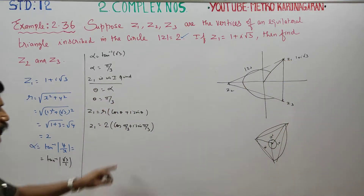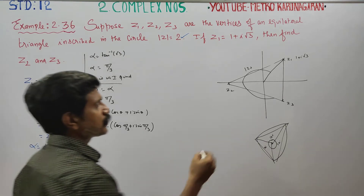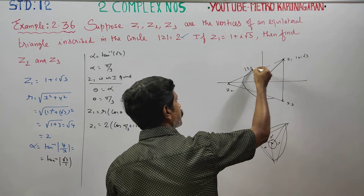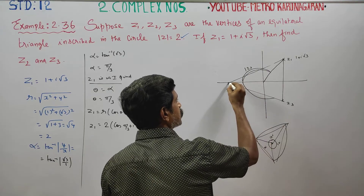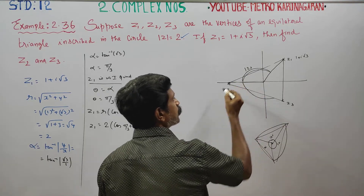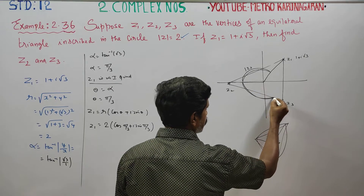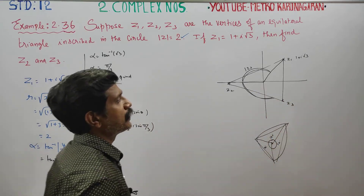You already have one angle. Now you can add 120 degrees. Since the triangle is equilateral, the vertices are equally spaced by 120 degrees. If you add 120 degrees, you get the point z2. If you add another 120 degrees, you get the point z3.